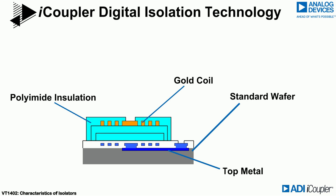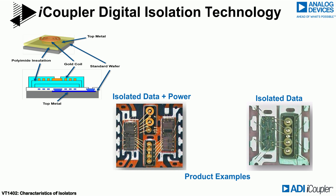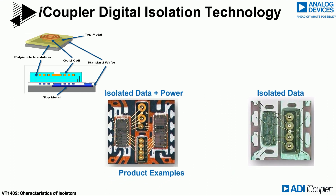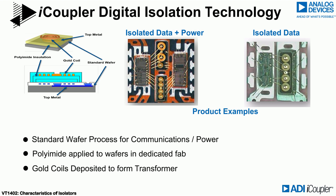This diagram shows the stack-up in a different perspective to help you visualize it. In these photos of actual I-coupler products, the data coils can be seen as the small gold-coloured circular features. Products that transfer power use a larger coil structure. Standard silicon wafer processes are used for the basic communications and power functions, with the polyimide and gold coils deposited in a dedicated internal foundry.